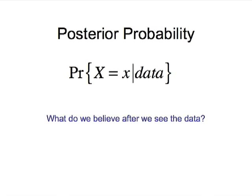The posterior probability is what we believe after we've seen the data. The probability of each explanation — that the random quantity X takes on the value little x — now has a new probability after we've seen the data. This is the posterior probability, which is really what we want to know by having examined data and changed our beliefs about the state of the world.